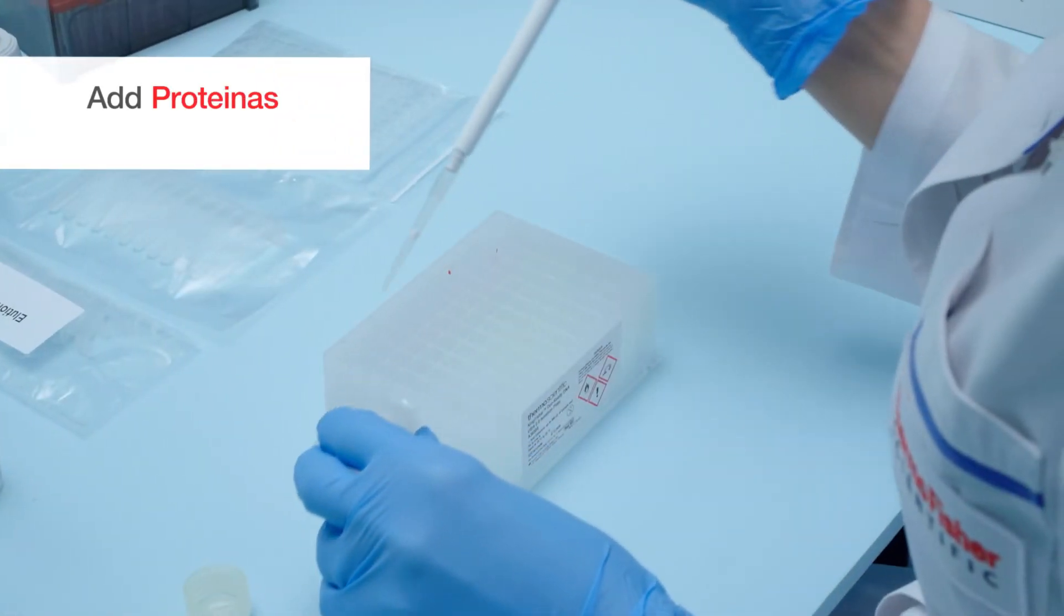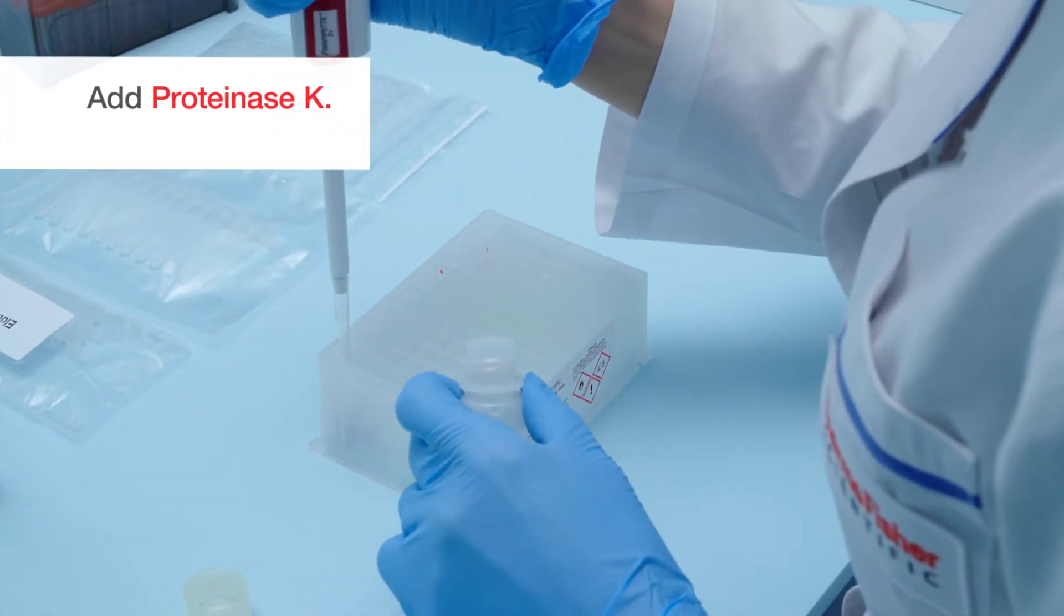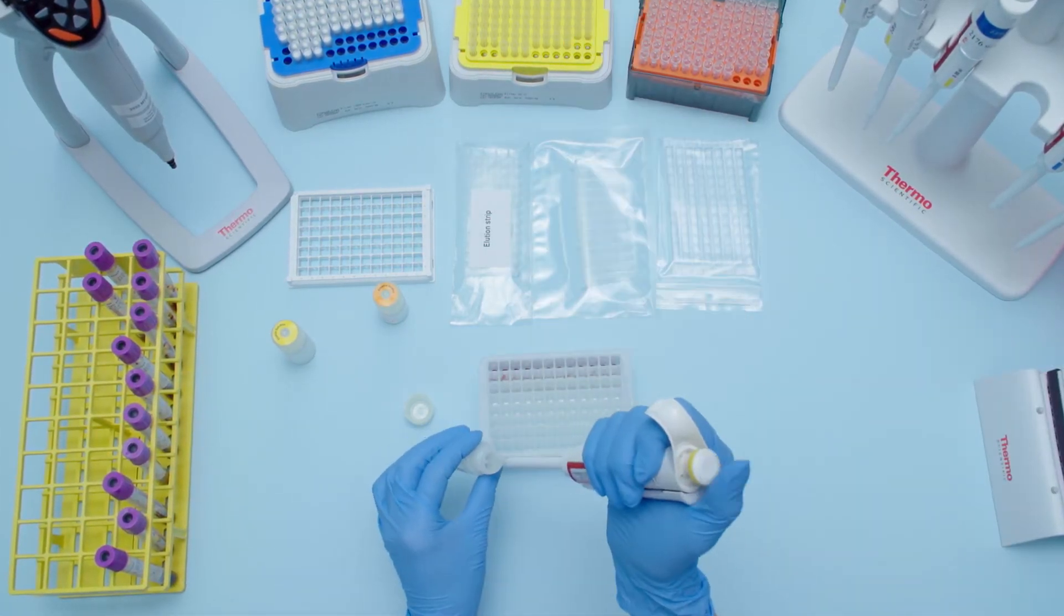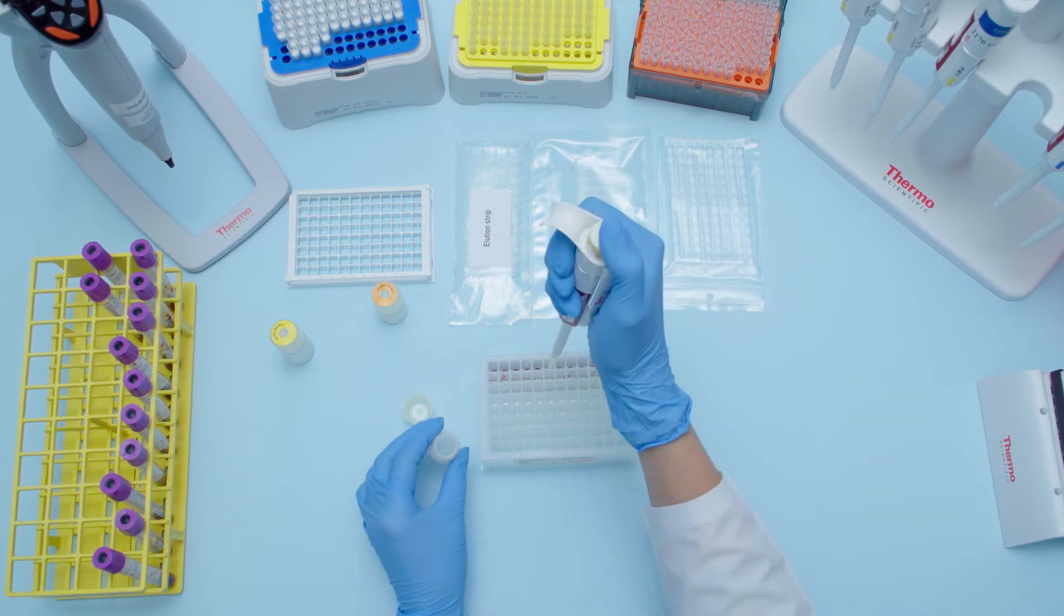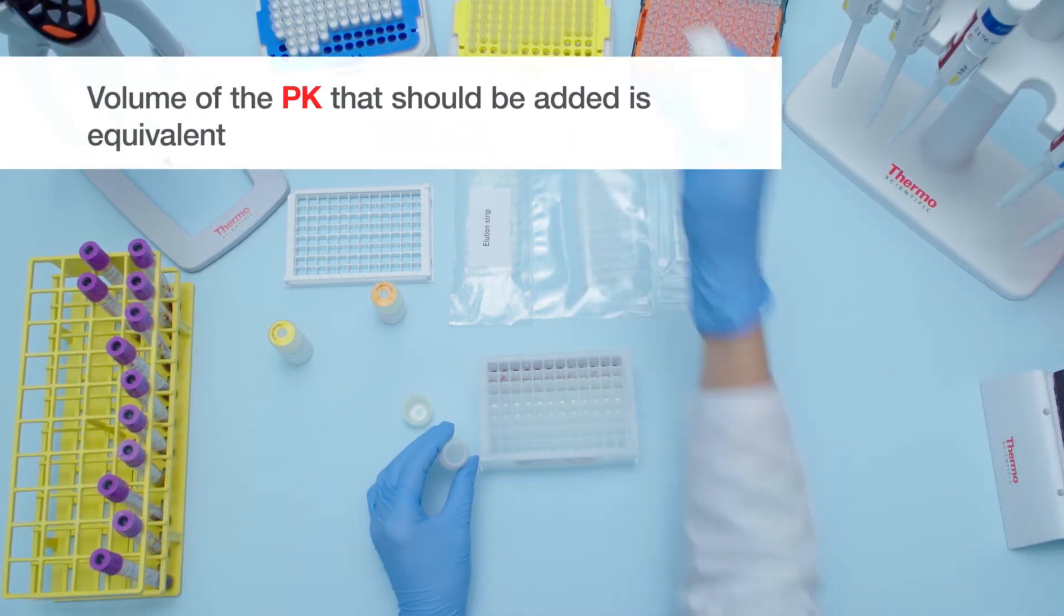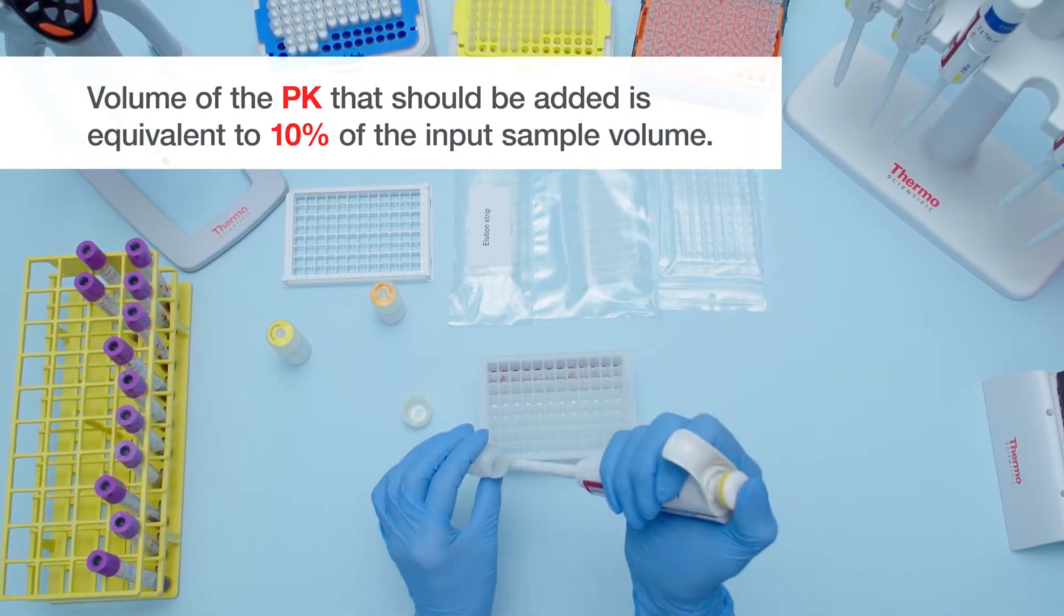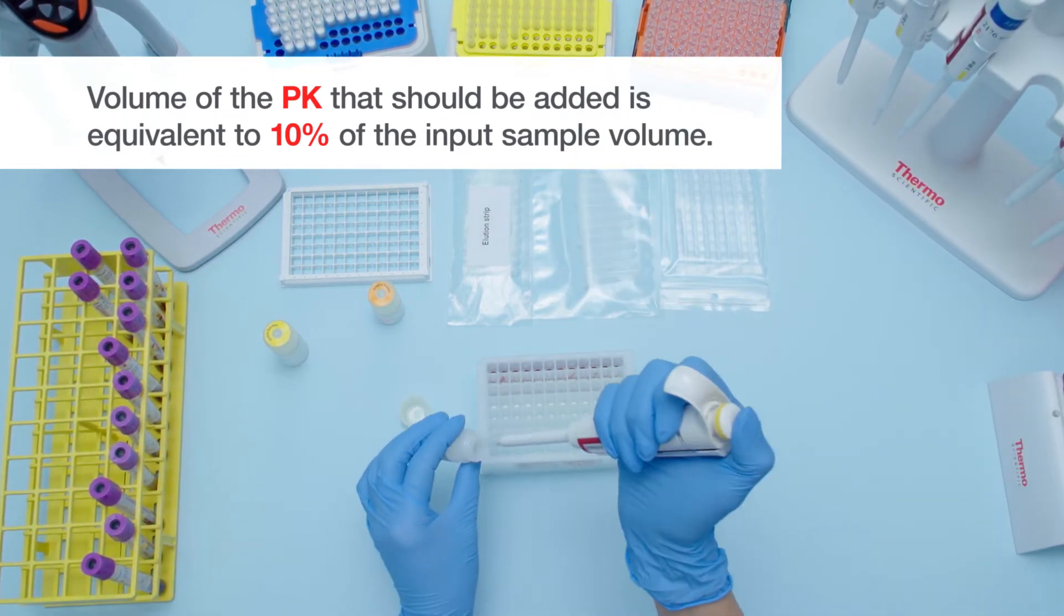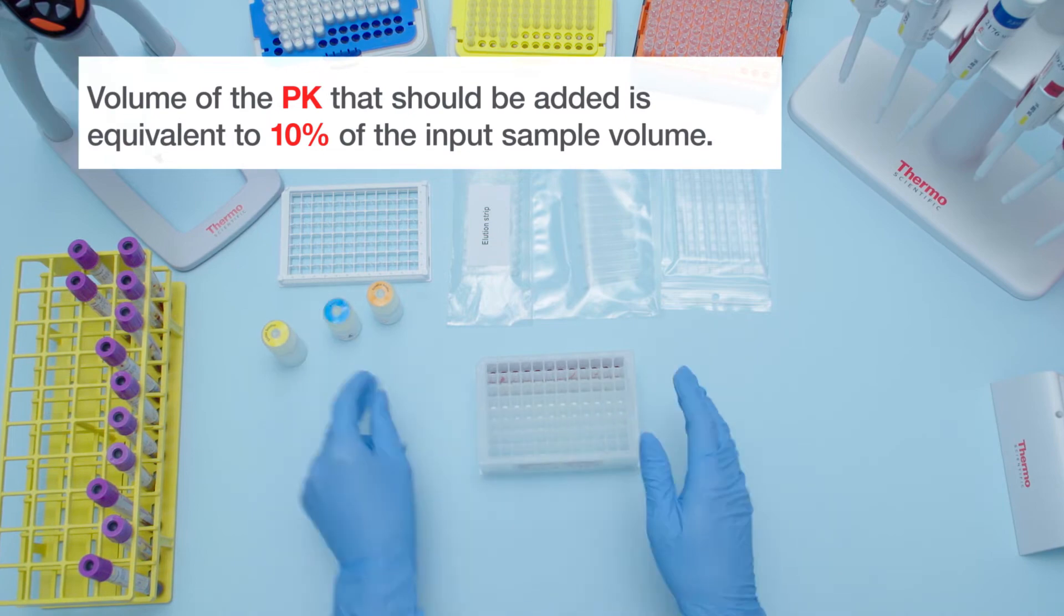Next, pipette Proteinase K into row A. There is no need to mix if the Enhancer, blood sample, and then PK is added in this order. Do not make a master mix of Enhancer and PK for this step, as this may result in lower DNA yields due to inactivation of the PK.